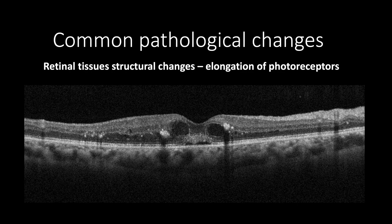Elongation of the photoreceptor layer can be found when there is an accumulation of subretinal fluid. For instance, in cases of central serous chorioretinopathy and some cases of cystoid macular edema such as diabetic macular edema and other vascular diseases. The elongation is due to loss of contact between the RPE and photoreceptors' outer segment, preventing phagocytosis of photoreceptors' waste products.